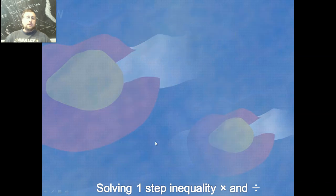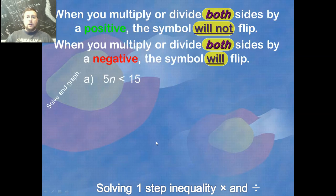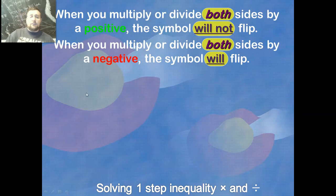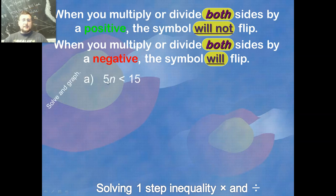Even though 14 was bigger than four, negative seven is smaller than negative two — so the sign flips. So remember: when you multiply or divide both sides by a positive, this symbol does not flip, but when you multiply or divide by a negative, this symbol does flip.